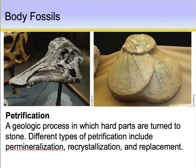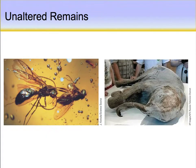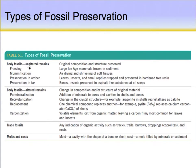Aragonite and calcite are polymorphs. We also see trackways as evidence of life in the past. Whole body fossils that are unaltered include insects preserved in amber, which preserves the complete body fossil. Mummification and freezing are other unaltered preservation types. So for unaltered remains we have freezing, mummification, amber preservation, and tar pits — where bones and insects are preserved in an asphalt-like substance; the actual material in tar pits is called asphalt.